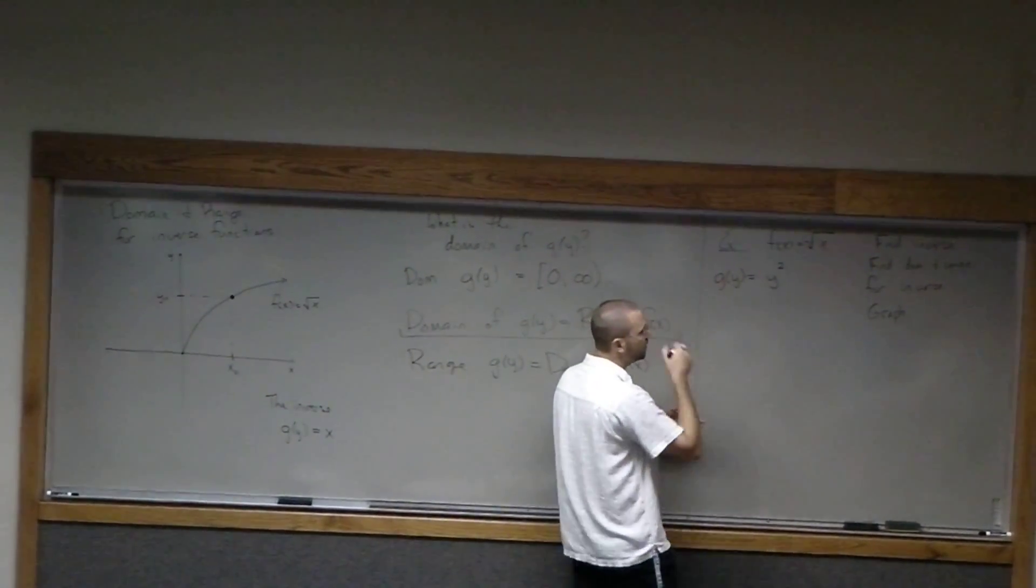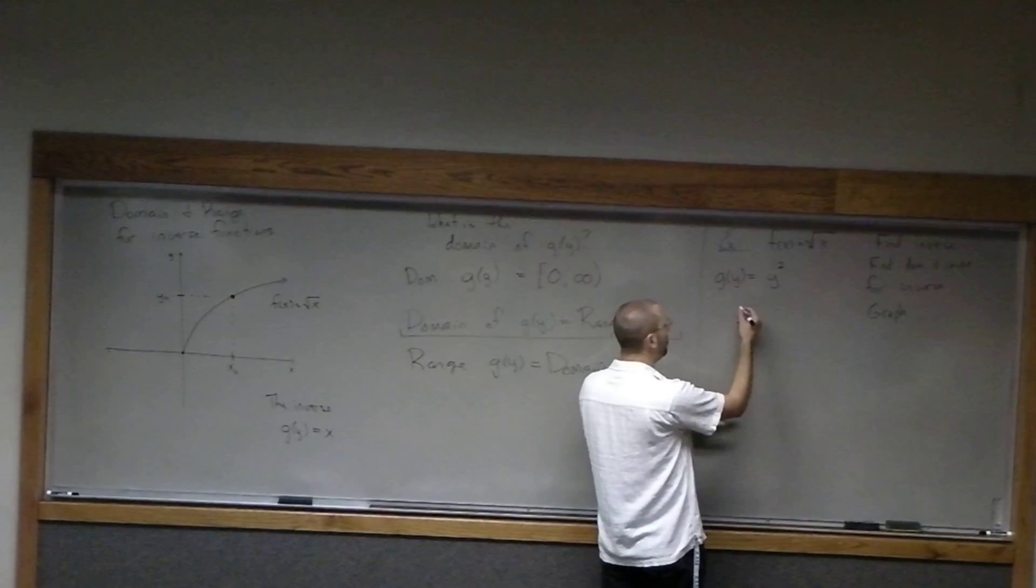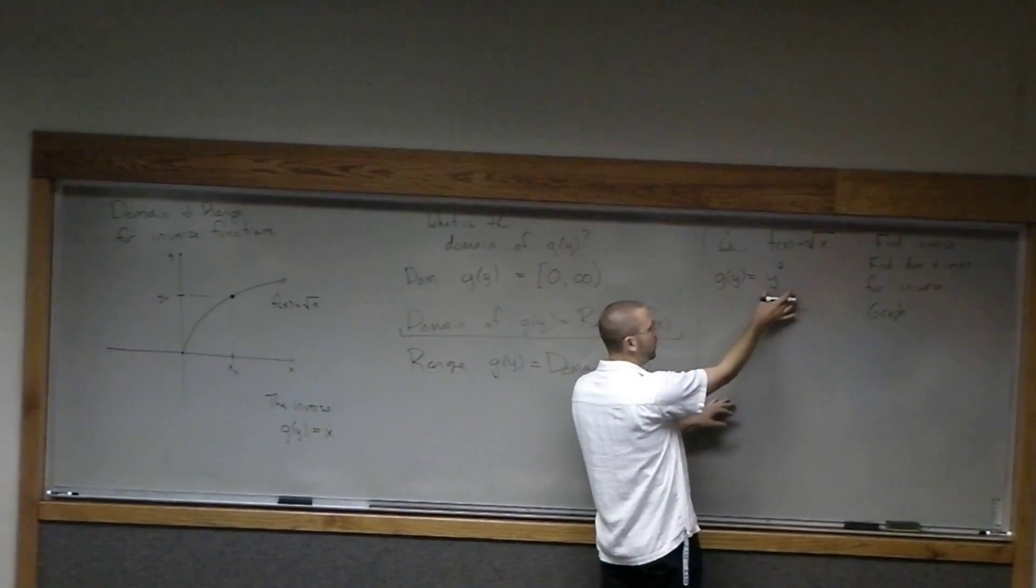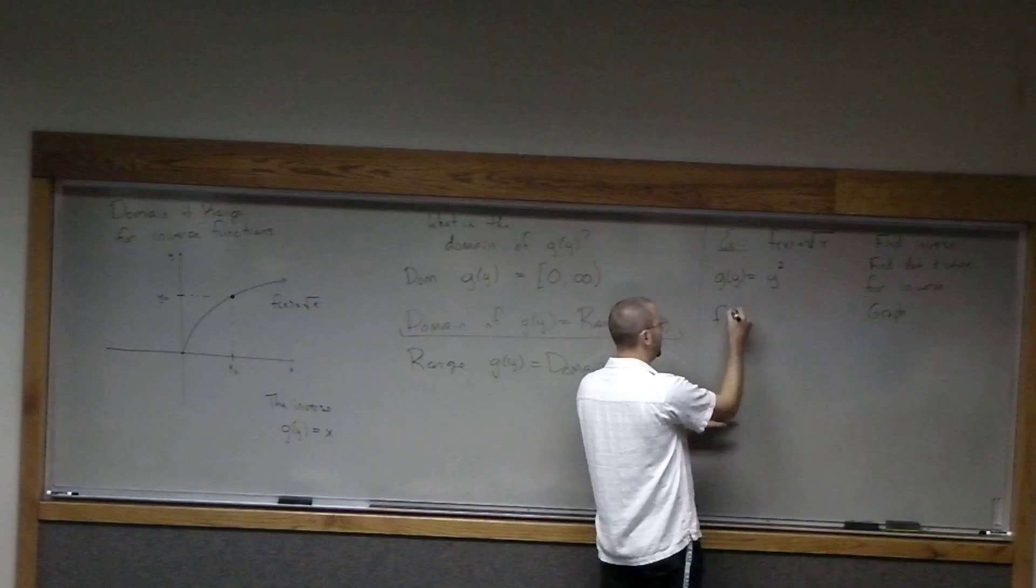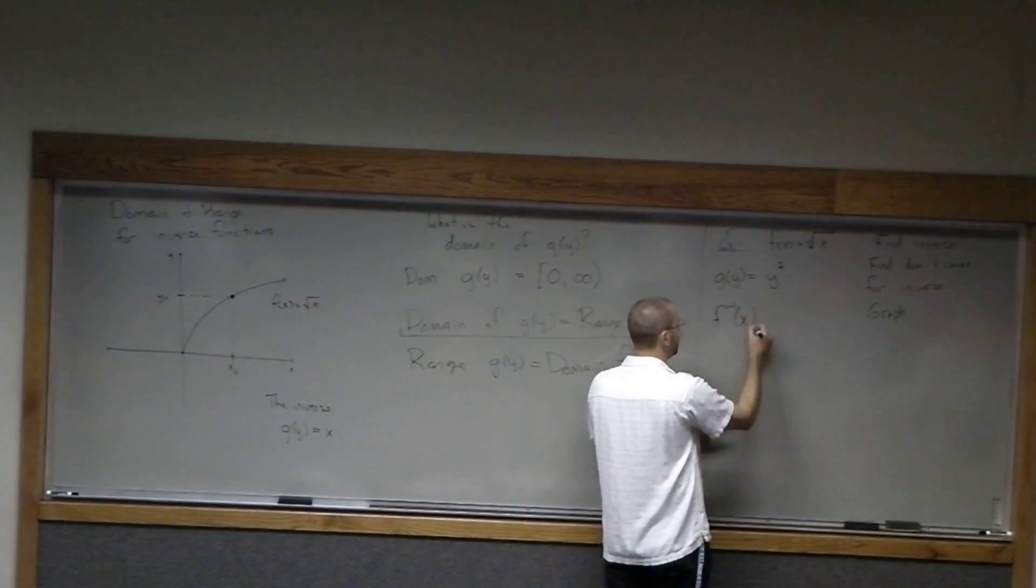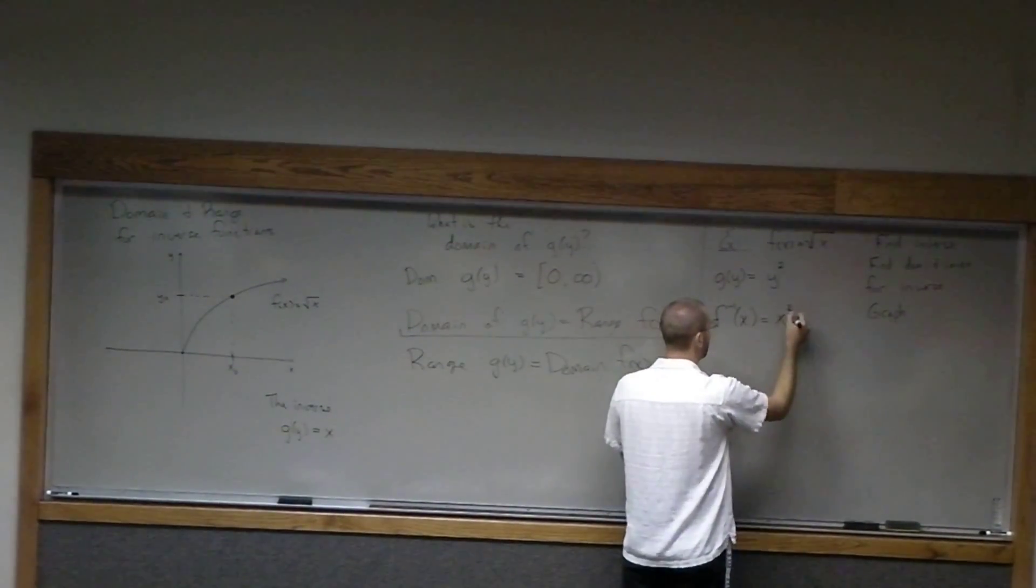Often times, and the book does this as well, instead of writing it as g of y equals y squared, we'll actually write this as f inverse of x equals x squared.